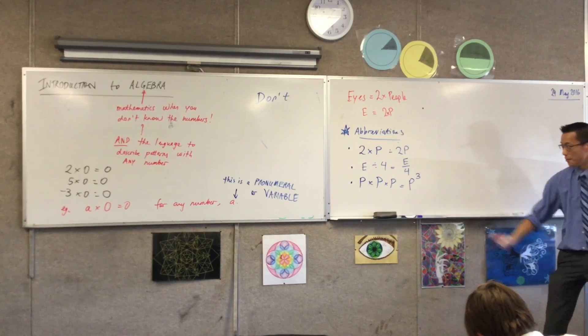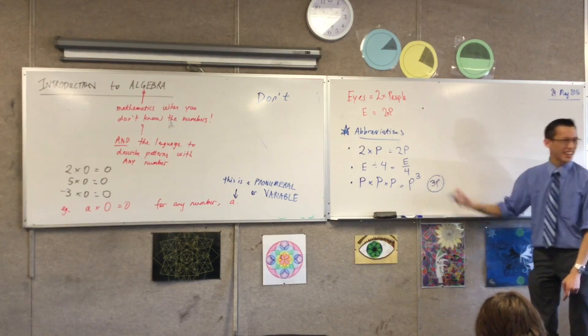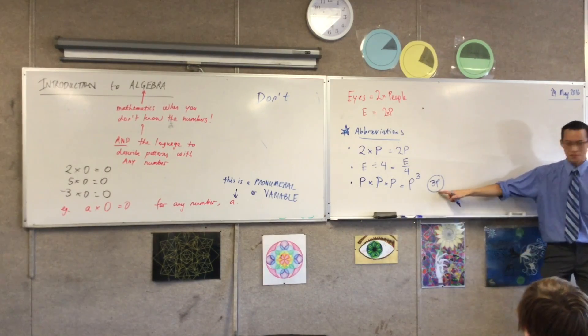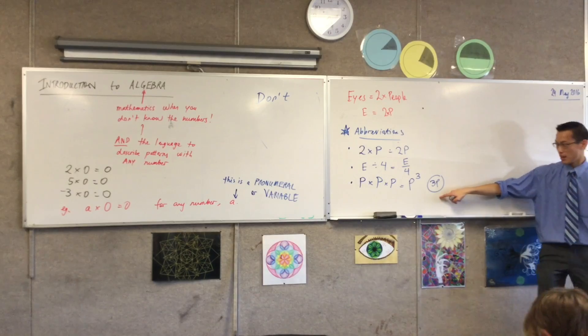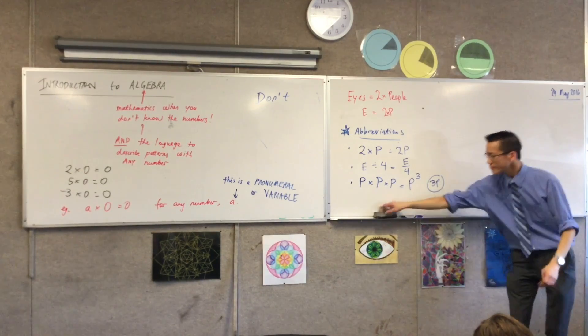Okay, p, and you can either say cubed or to the power of three. And those are a little bit different, aren't they? This versus, don't write this down, versus this, they're kind of different. This is three times p, but this is p times itself three times, and they're a little bit different.